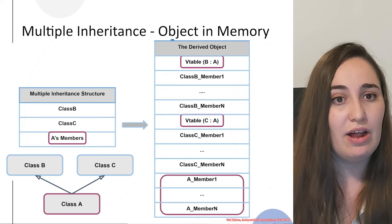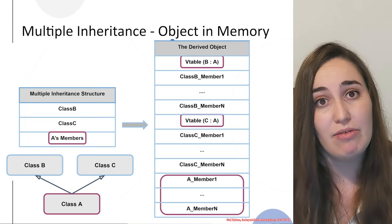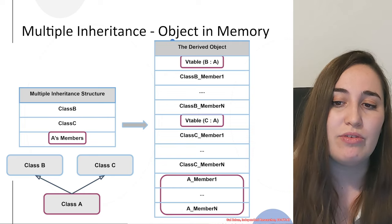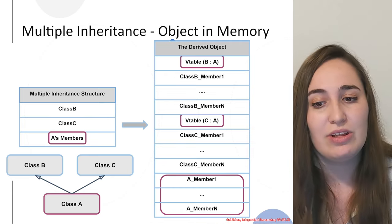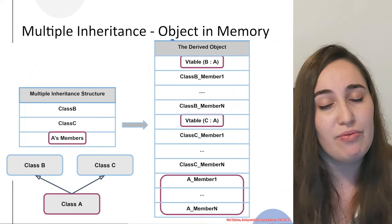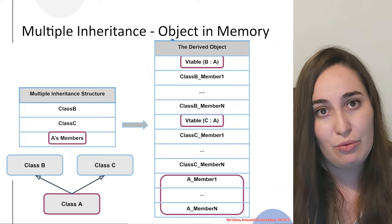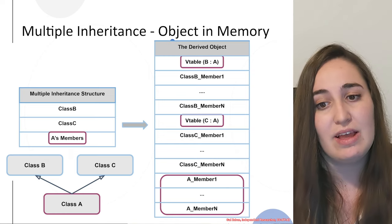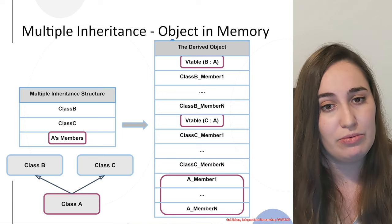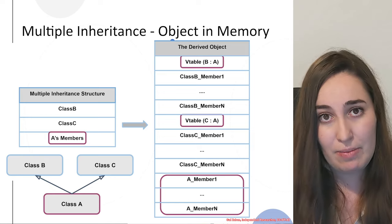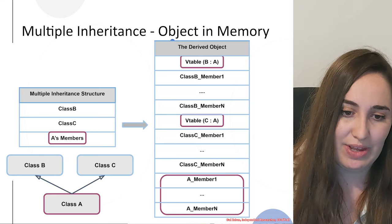In general, this is how a derived class looks in memory after the constructor call, and this is what the constructor actually creates. If there are no virtual functions, the V table would be unnecessary and will not be part of the constructor — but when talking about multiple inheritance, this is very unlikely to happen. Keep it in mind in case you see something like that.